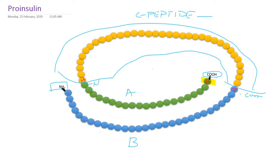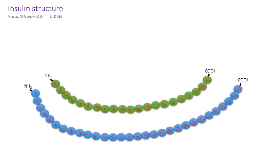Now we will study the exact structure of active insulin. The A chain contains 21 amino acids and the B chain contains 30 amino acids. These two chains are interconnected by strong covalent bonds called disulfide bonds — specifically two inter-chain disulfide bonds. Disulfide bonds are formed by the amino acid cysteine. The 7th amino acid of the A chain is cysteine, and the 7th amino acid of the B chain is also cysteine.